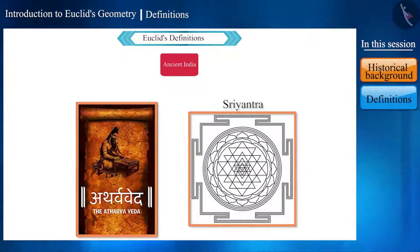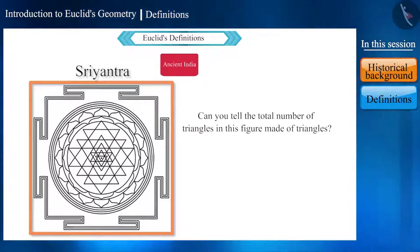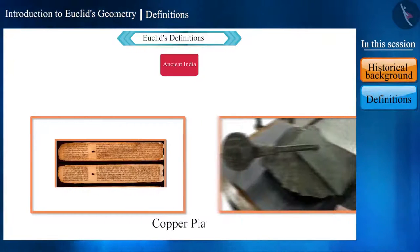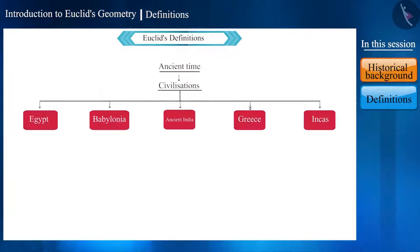In the Sri Yantra, given in the Atharva Veda, nine isosceles triangles are connected with each other. Can you tell the total number of triangles in this figure made of triangles? These are arranged in such a way that 43 small triangles can be formed from them. We have been receiving information on geometry from one generation to the next either orally or through written messages on copper plates.